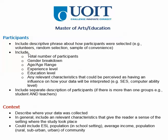We really want to include the first five characteristics: the total number of participants, the gender breakdown, the age or age range, the experience level, and education level. Those are pretty important characteristics to include. And then we can add any relevant characteristics that could be perceived as having an influence on how the data will be interpreted — for example, socioeconomic status or computer ability.